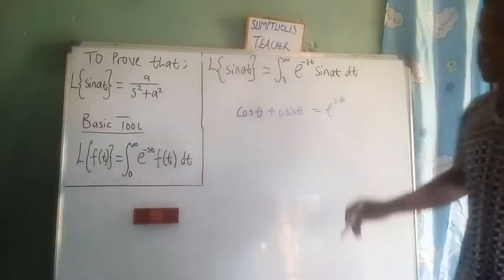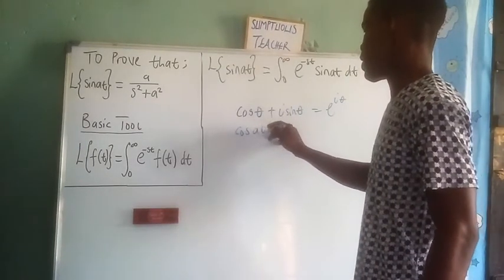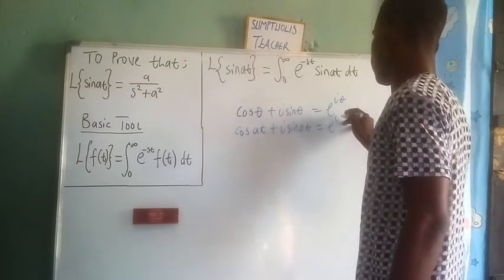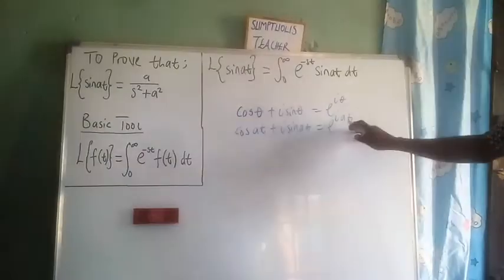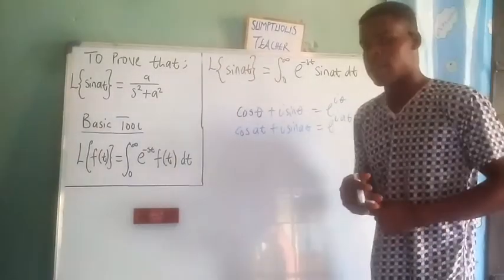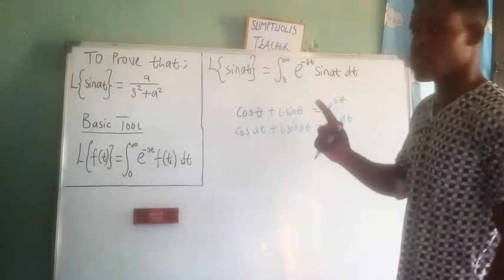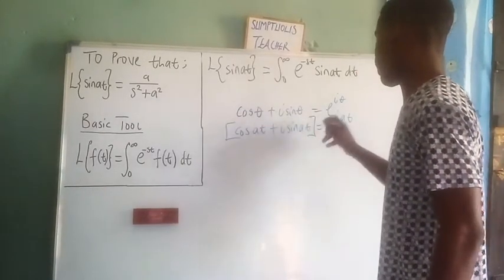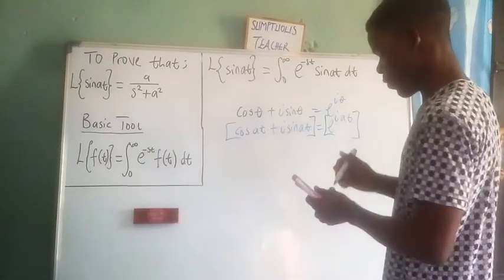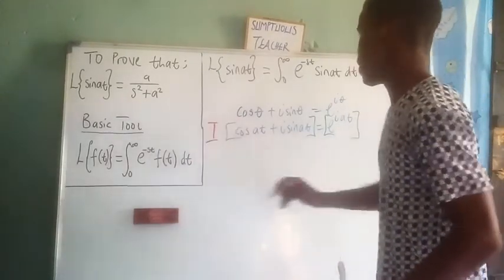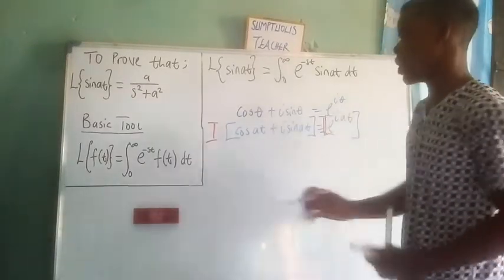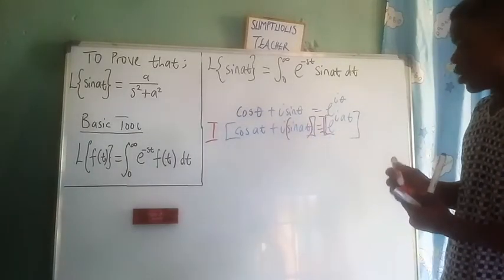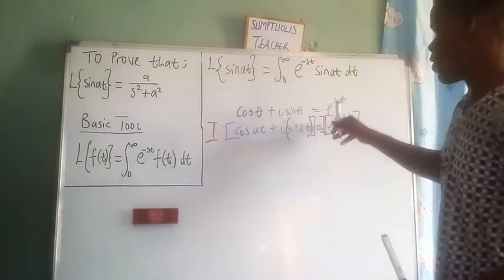Since our angle here is at, we have cosine at plus i sine at equals e to the i·at. All we need right now is sine at, so if we consider the imaginary part, the imaginary part of e to the i·at gives us sine at. So we will make use of the imaginary part of e to the i·at in place of sine at.